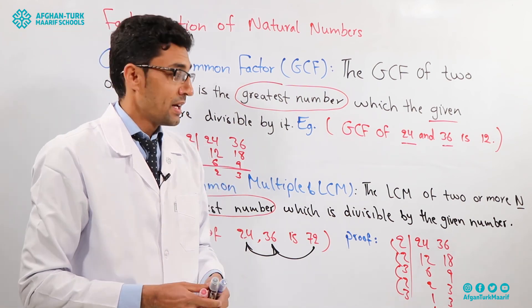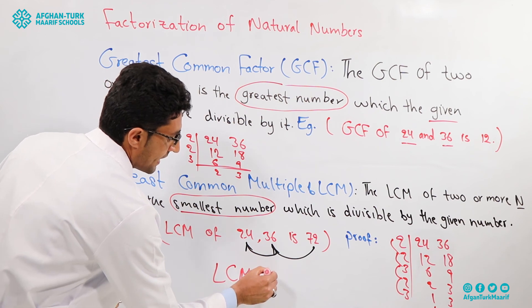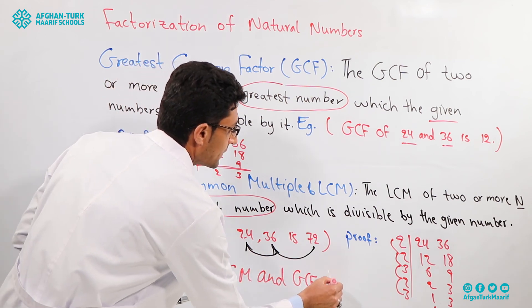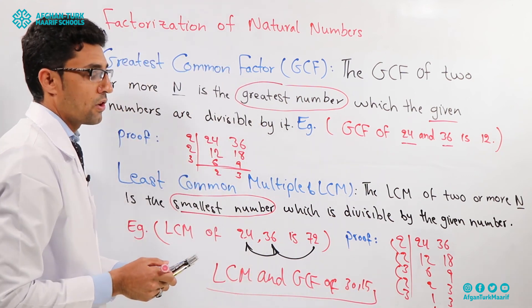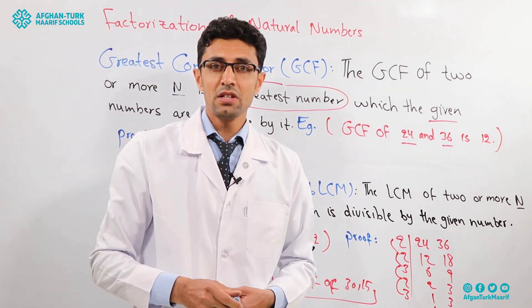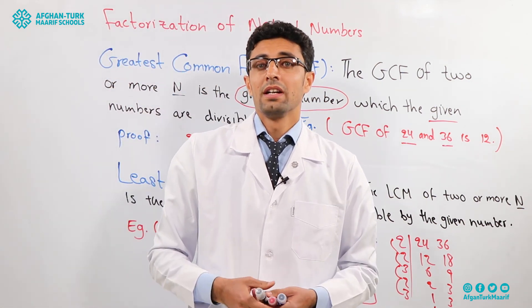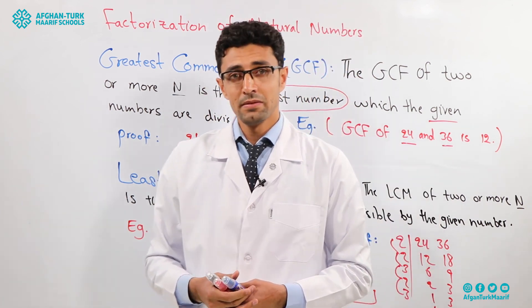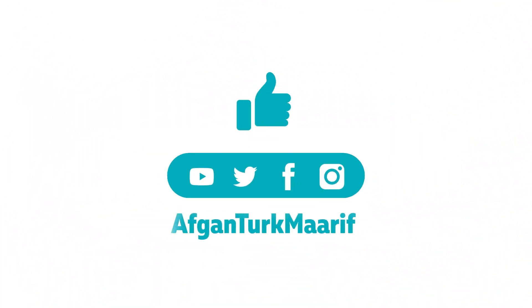For homework, find the LCM and GCF of 30 and 15. In the next session, I hope you understand the whole definitions of Greatest Common Factor and Least Common Multiple. Best of luck — see you next time. Study more to understand more. Thank you!